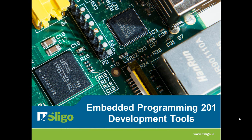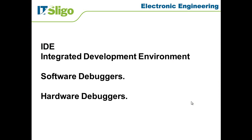The development tools include one of the pieces of software you would regularly use: the integrated development environment. This is sometimes just referred to as the compiler, whereas in actual fact it's far more than just a compiler because it includes a lot of things. We'll be looking at the integrated development environment, software debuggers, and hardware debuggers and the differences between those.